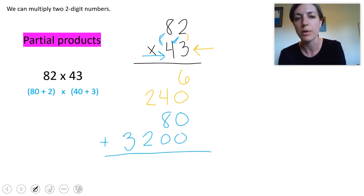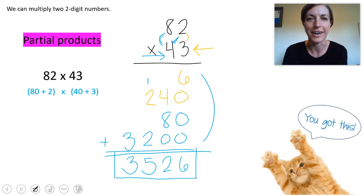Now we've got all these partial products and again we add them together. So in my ones place I have 6. In my tens place 12. Carry that one. In my hundreds place 5. And in my thousands place 3. So there's my answer again 3526.